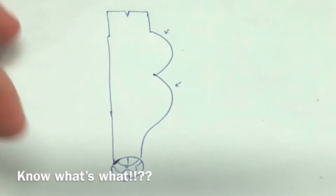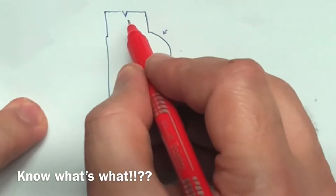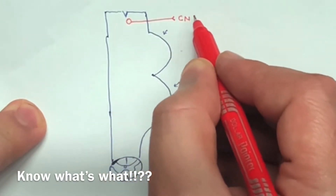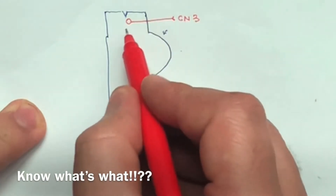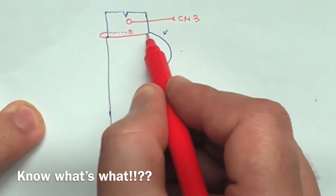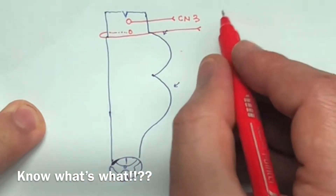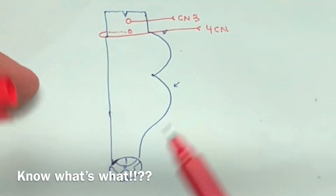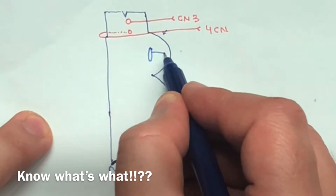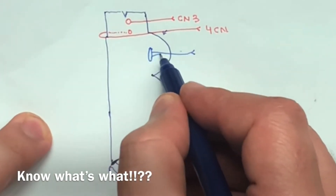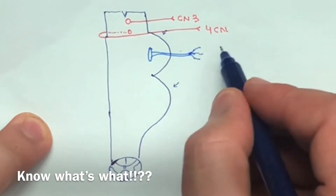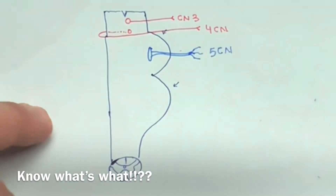The third cranial nerve exits from the front of the midbrain. The fourth cranial nerve goes back and exits from the back side of the midbrain, then comes around to the front again. The fifth cranial nerve — also called the trigeminal nerve — divides into three branches.